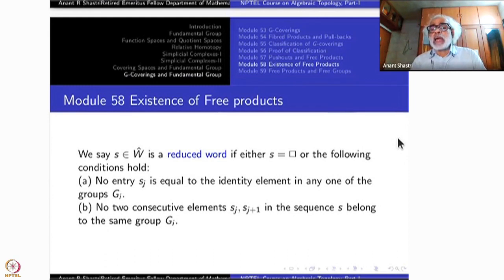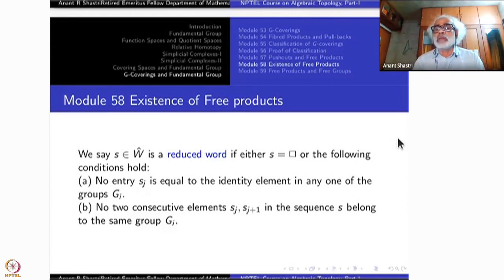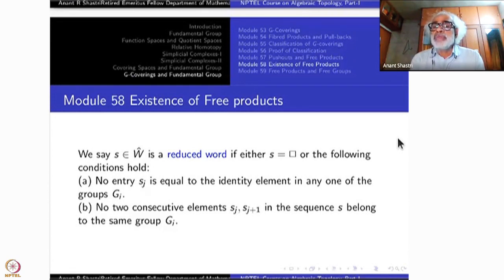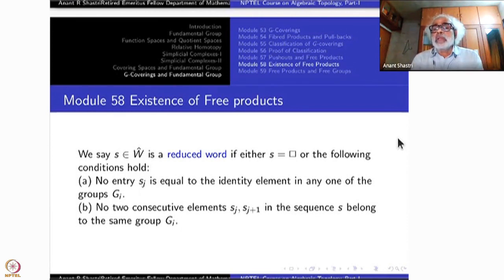Last time, starting with a family of groups, we took the disjoint union of these groups as our alphabets. Over these alphabets, we constructed what are known as free words, which are nothing but finite sequences of alphabets. On the free words, we introduced an equivalence relation. That made it into a group — namely, concatenation of two sequences gives you a free word. Along with the empty word, it makes it a semi-group: an associative binary operation with a two-sided identity.